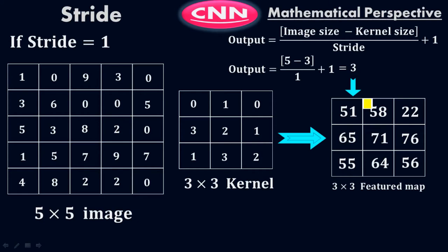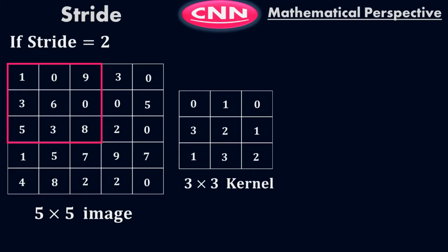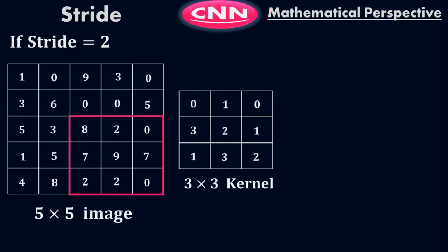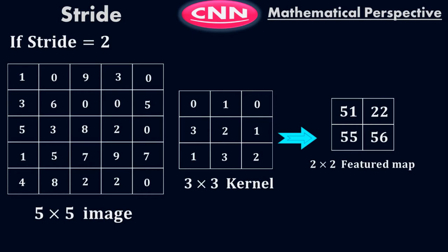But what if we take stride equals 2? If stride equals 2, when you pick this matrix with the kernel, you need to leave two columns. If stride equals 2, you leave two columns and then start from here, leave two rows — remember, stride equals 2. If stride equals 2 you leave two rows and then again two columns, and that's it. If you do all this process, at the end you will get a 2x2 feature map.